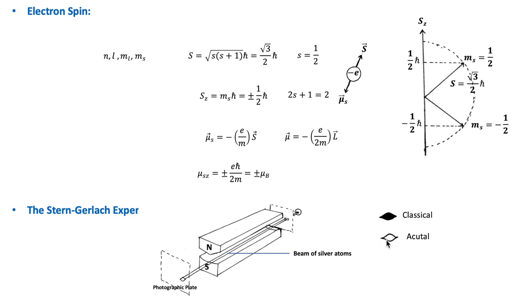The beam of the silver atoms split into two parts that corresponds to the two opposite spin orientations relative to the magnetic field. One part corresponds to spin up and the other to spin down.